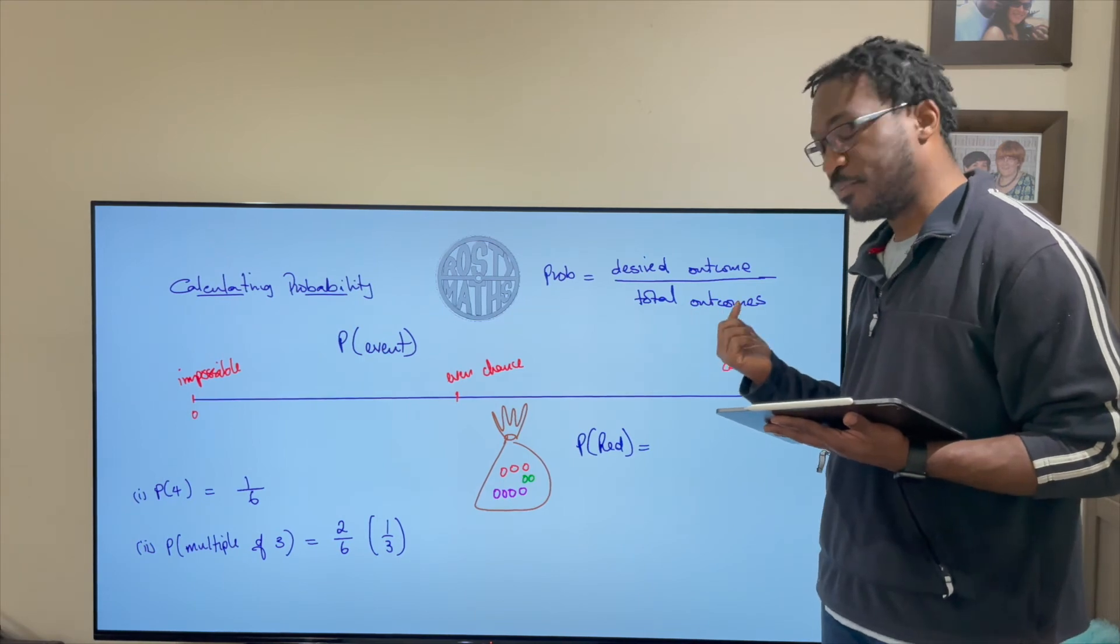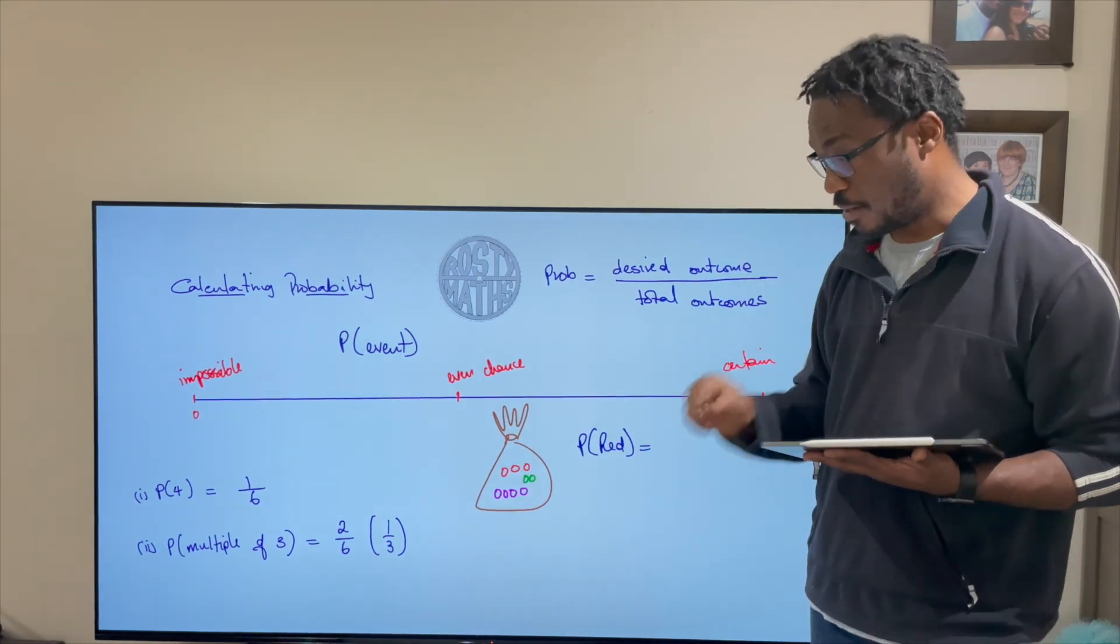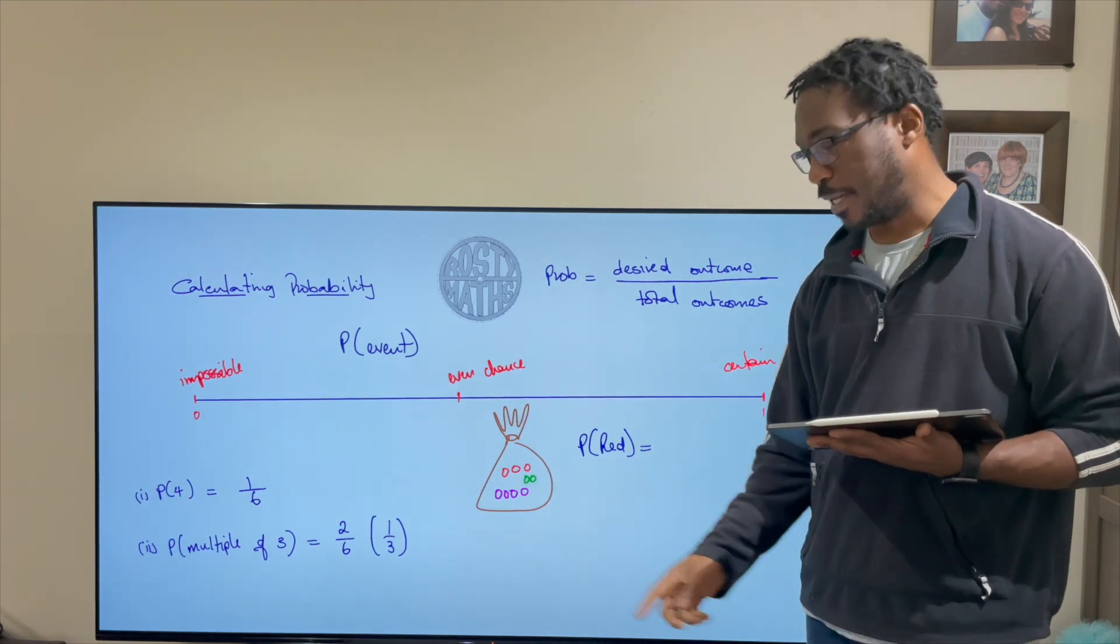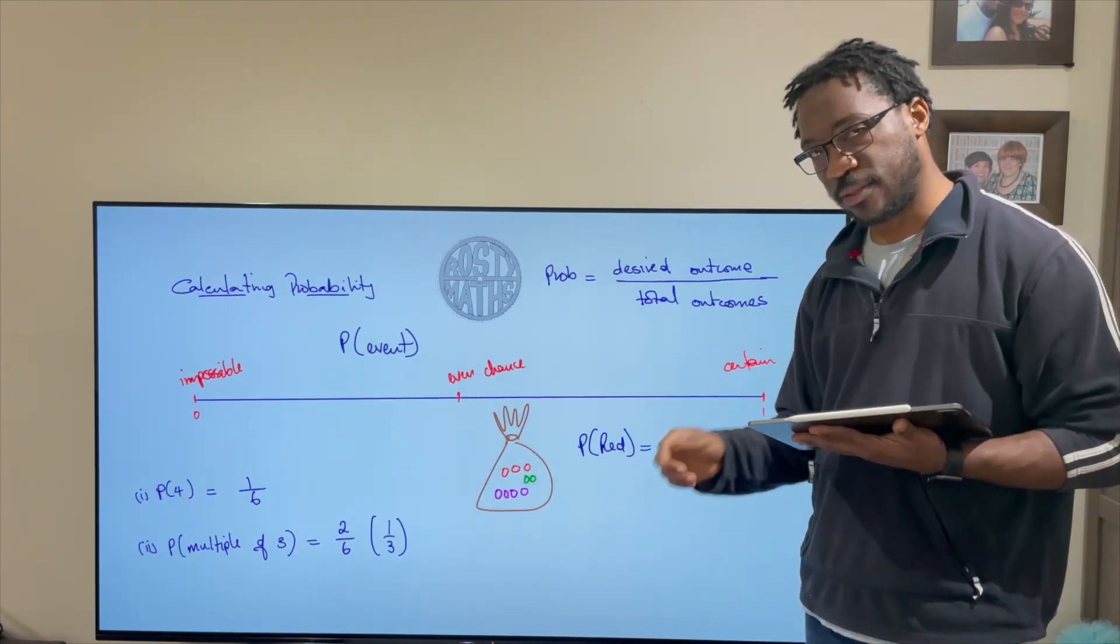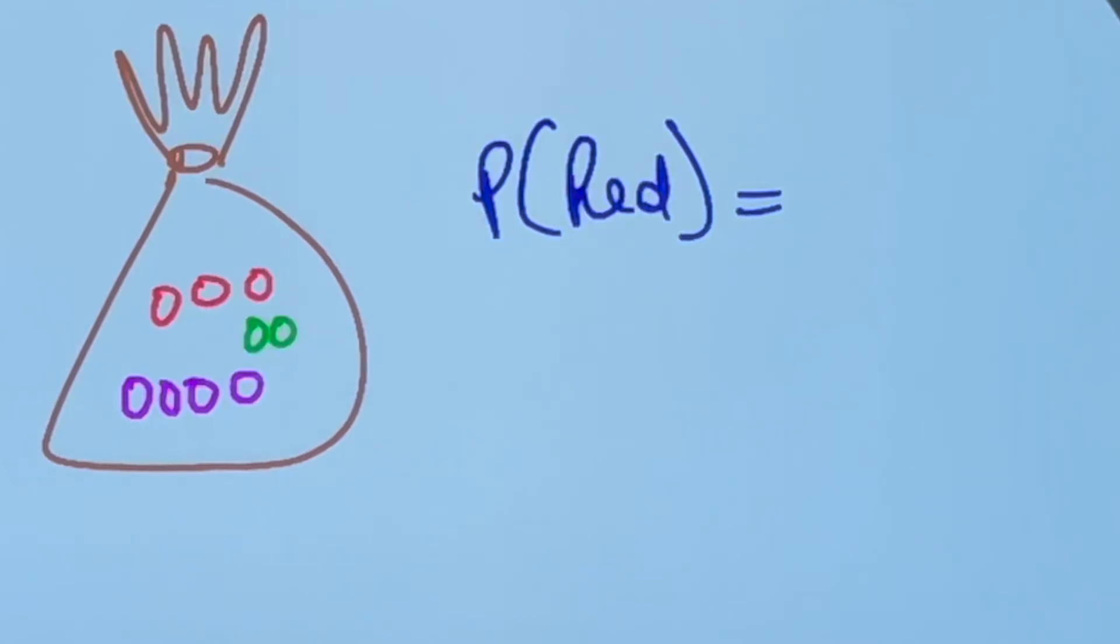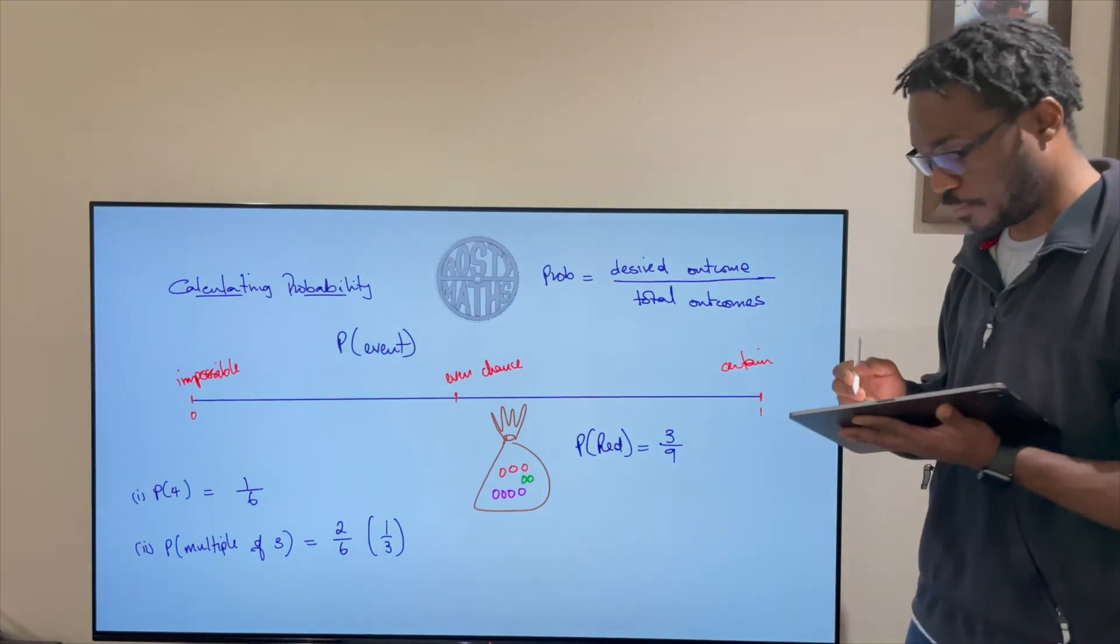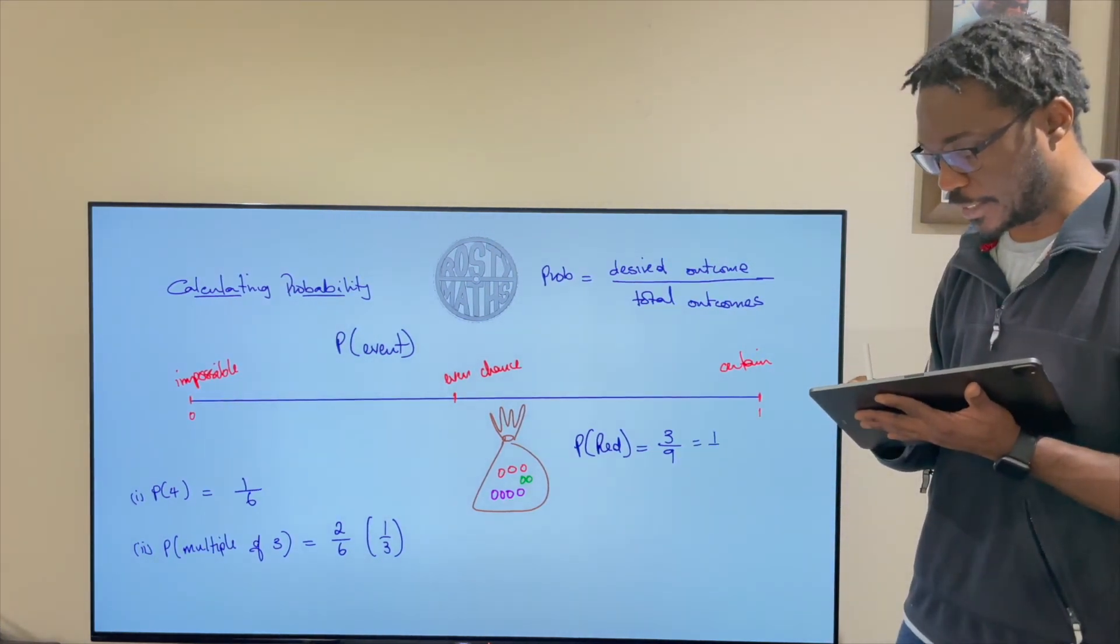The total outcome though would be nine because I've got nine counters in total in the bag and the red counters there are only three. So therefore the probability of getting a red counter is three out of nine. Again you can leave it like that if you want. You can simplify that and say that that is a third.